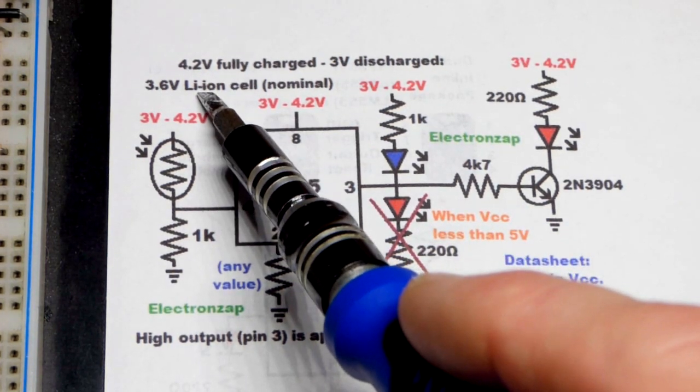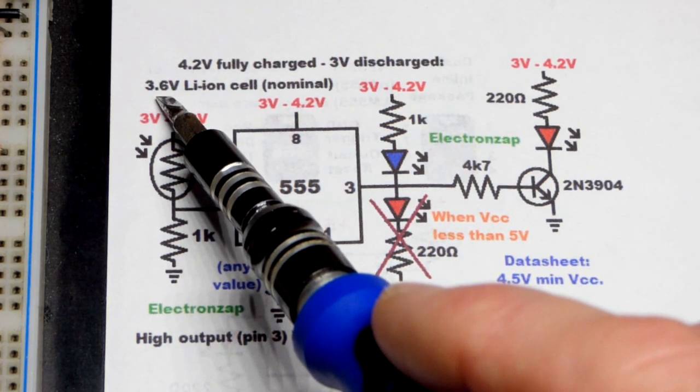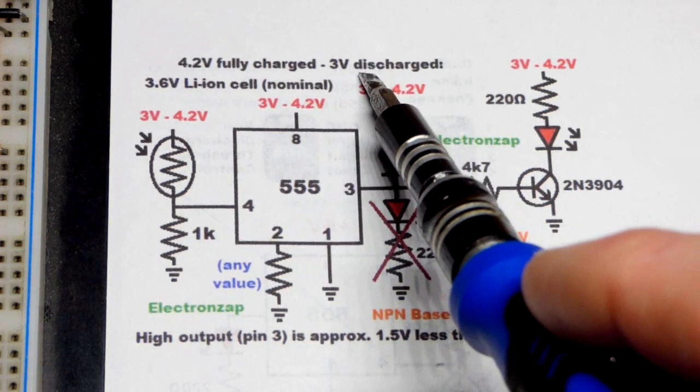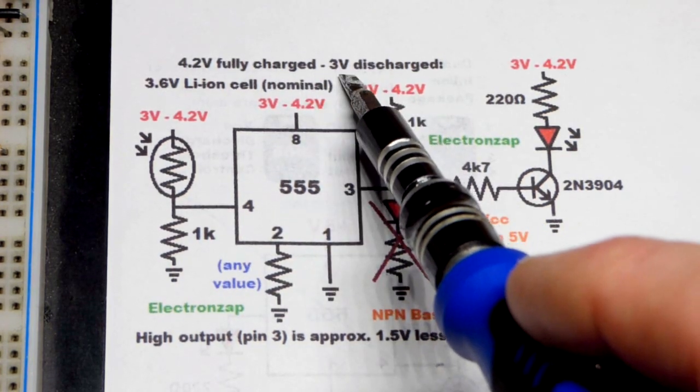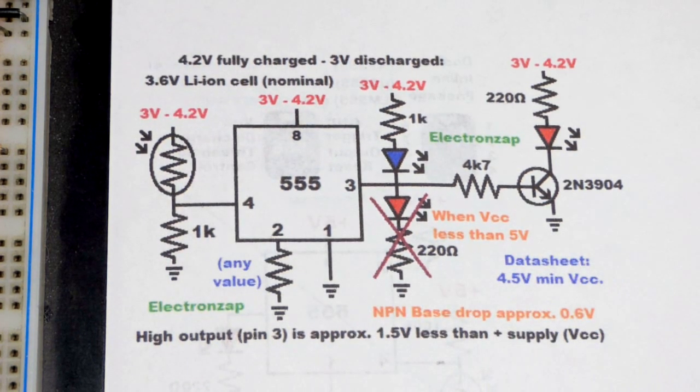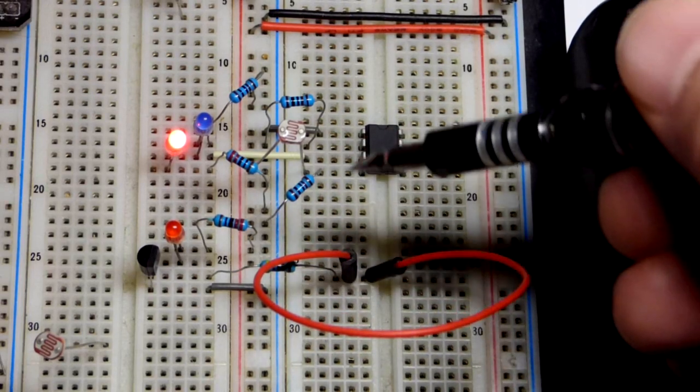We're going to imagine we're using a lithium ion battery, which is usually about 3.6 volts on average, 4.2 volts when fully charged, and you stop using it when it's about 3 volts. Now we're going to look at the actual circuit, except the transistor is not plugged in yet.